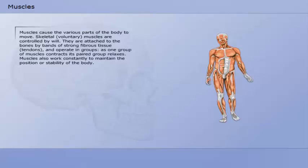Muscles cause the various parts of the body to move. Skeletal muscles are controlled by will. They are attached to the bones by bands of strong fibrous tissue and operate in groups. As one group of muscles contracts, its paired group relaxes. Muscles also work constantly to maintain the position or stability of the body.